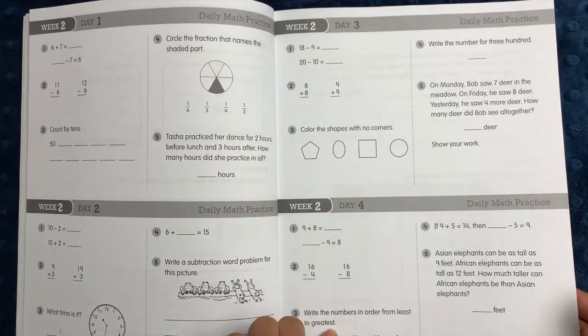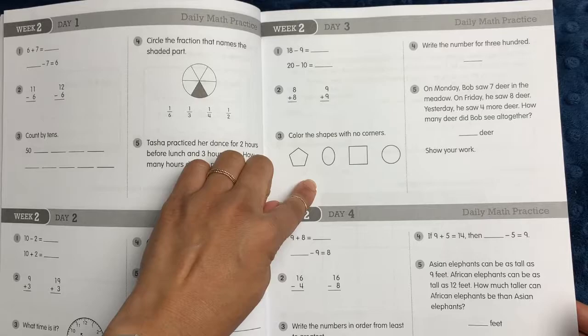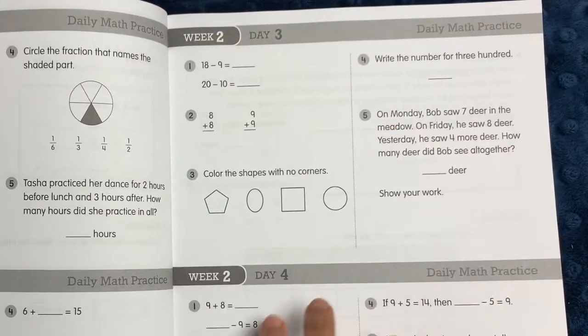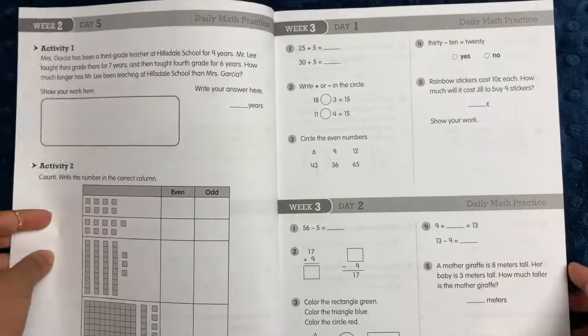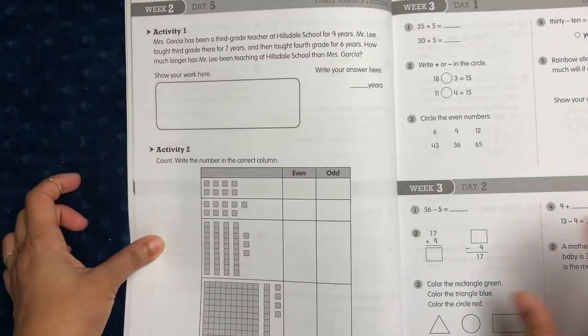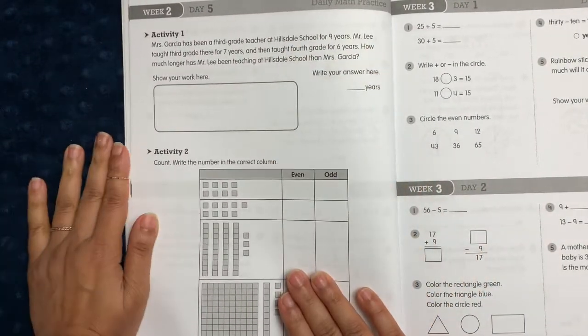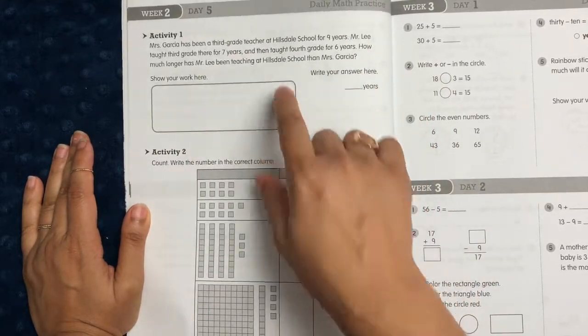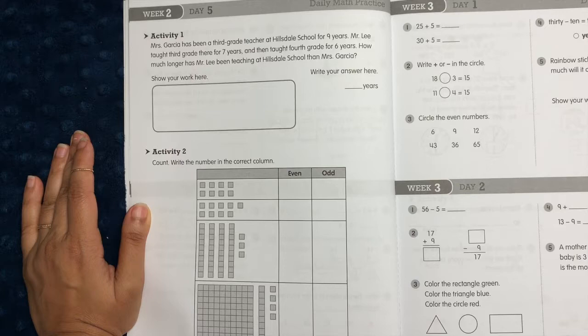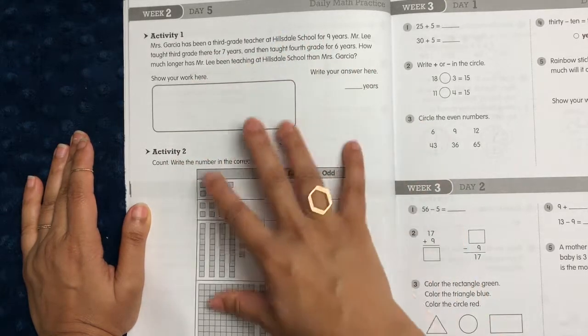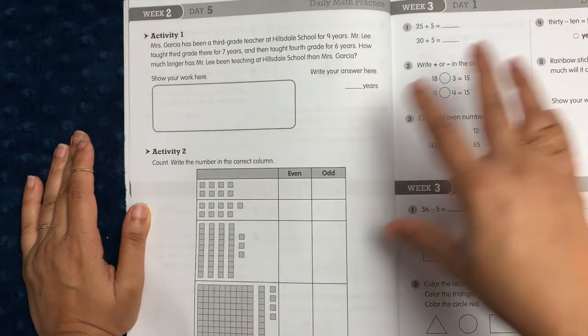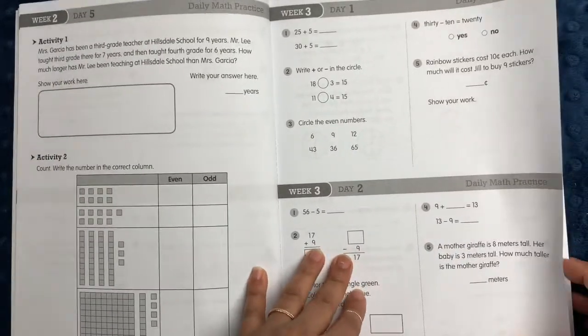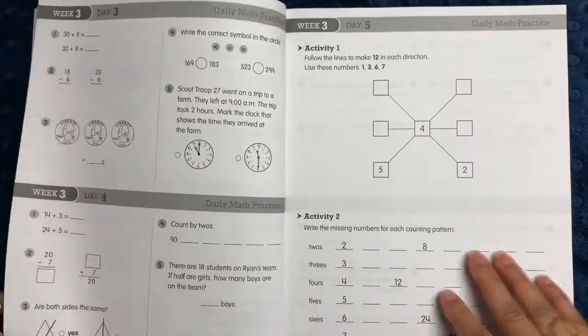Days one through four are designed to be fairly short sets of problems—you'll see here just five problems a day. Some of them are straight arithmetic, some involve coloring, some involve a little bit of word problems. Then you go on to day five, and day five is actually much more intensive. It has a little bit more critical thinking, an area to show your work, and a couple different activities, but again this is just a little bit more involved than the arithmetic of the first four days.